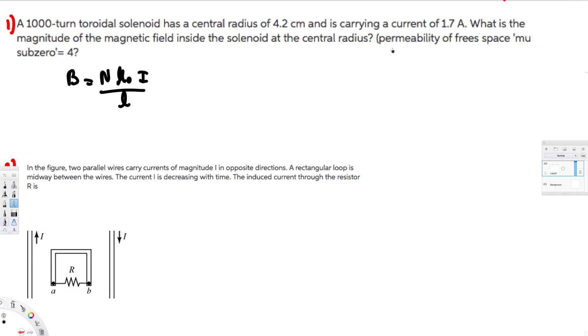Since this is a circle, the length is the circumference, so we can write this equation as N μ₀ I over 2π R. This is the length for a circle.